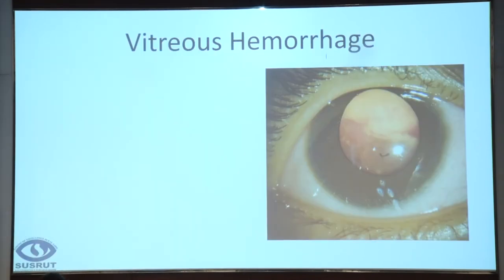Vitreous hemorrhage — this is a very obvious case because you can see the tumor in this portion, but sometimes the vitreous hemorrhage can completely obscure the fundus. This child also has other features of neovascular glaucoma, like the ectropion uvea visible here. But again, if you have vitreous hemorrhage and want to intervene as a VR surgeon, please first do an ultrasound.